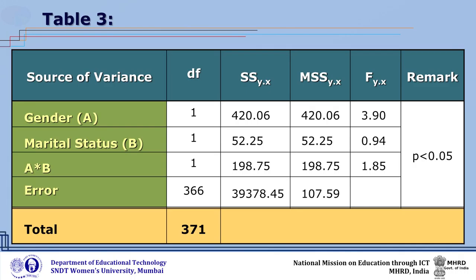It may therefore be said that anxiety was found to be independent of the interaction between gender and marital status when psychological risk factors and verbal intelligence were taken as covariates.